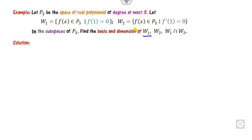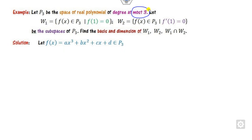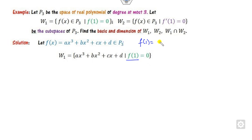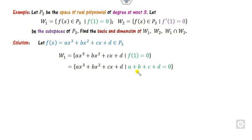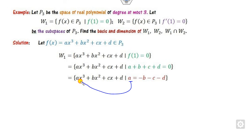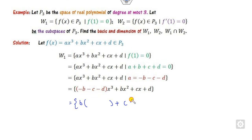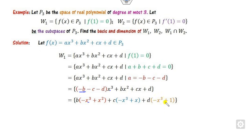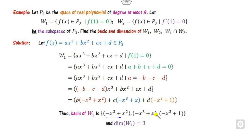Now consider an example involving polynomials of degree at most 3, finding the basis and dimension of W₁, W₂, and their intersection. For W₁, write the general polynomial f(x) = a + bx + cx² + dx³. From the given condition, find f(1) = a + b + c + d, substitute and solve for a. Now all terms are expressed in b, c, d, so equate coefficients of b, c, and d to find three basis vectors. The dimension of W₁ is 3.